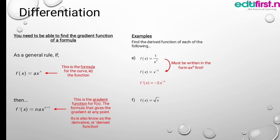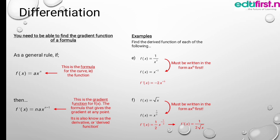Another example: f(x) equals the square root of x. When we write it, we have x to the power of one half, and the derivative will be one half x to the power minus one half, which is 1 over 2 times the square root of x.